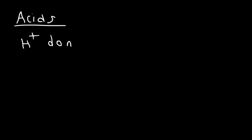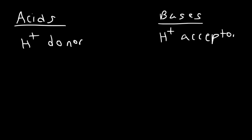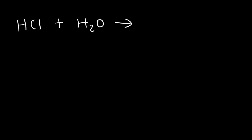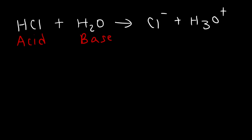You also need to know the Bronsted-Lowry definition. Acids are proton donors; bases are proton acceptors. If we put HCl in water, HCl is the Bronsted-Lowry acid and H₂O is the Bronsted-Lowry base. HCl donates a proton to become chloride, and water accepts the H⁺ ion to become the hydronium ion H₃O⁺. H₃O⁺ is called the conjugate acid, and chloride is the conjugate base.